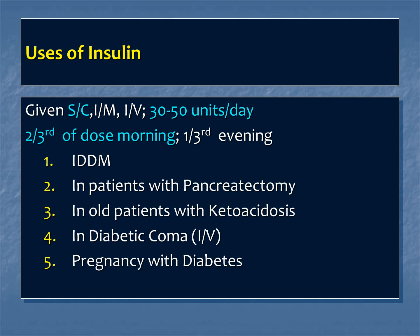Common indications: number one and most important is insulin-dependent diabetic patients — type 1 diabetes mellitus. Second, where some operation or removal of part of the pancreas — pancreatectomy — has occurred. Third, non-diabetic patients who have suffered from ketoacidosis. Fourth is diabetic coma — in which we give regular insulin intravenously in the form of infusion.